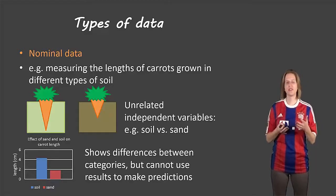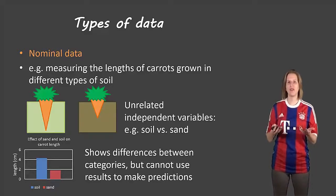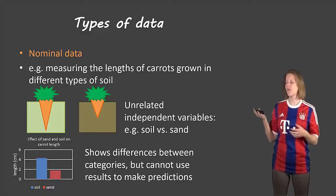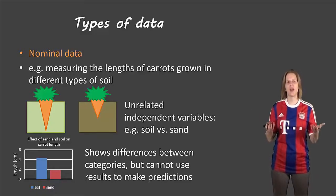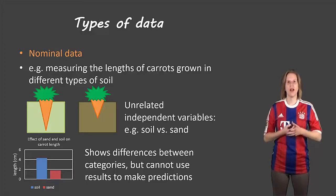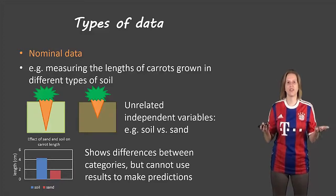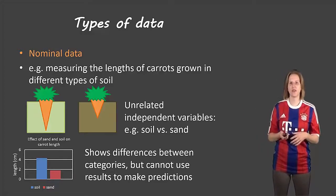And this shows the difference between the different categories, but we can't really make any predictions. We couldn't say based on this information what would happen if we tried to grow a carrot in rock. We couldn't say from this information how that would turn out.